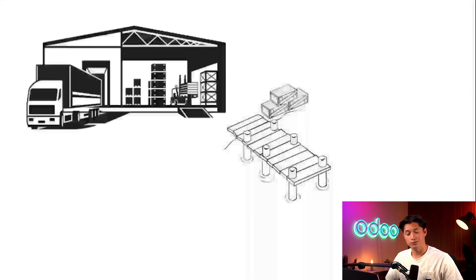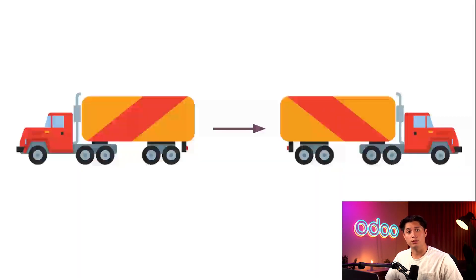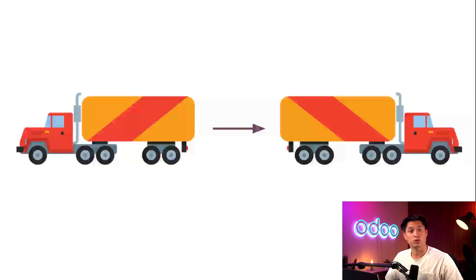What is cross-docking? Well, I'm glad you asked. When we receive products on a truck, we don't always want to enter them into our warehouse inventory. Sometimes we want to put them onto another truck and send them directly to our customers. This reduces the amount of warehouse space we need and also allows us to get our customers their products as quickly as possible. All right, let's jump into Odo and see how cross-docking works.